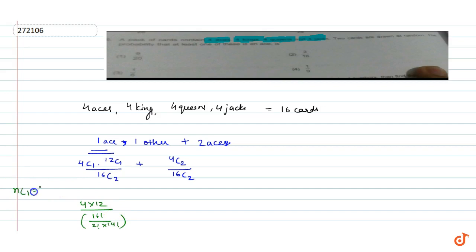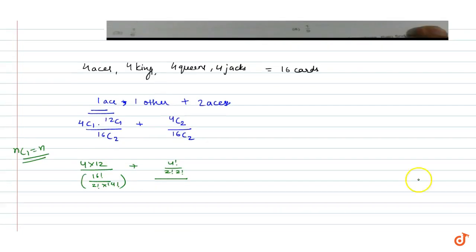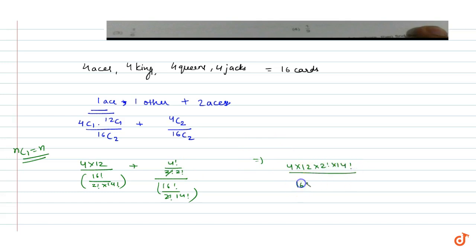हमें पता है nC1 = n, and 4C2 = 4!/( 2! × 2!). So the expression becomes: [4×12×2!×14!] / [16×15×14!] plus [4×3×2!] / [2! × 16×15×14!]. यह cancel out हो जाता है।